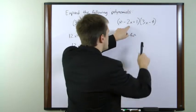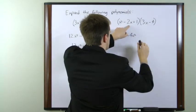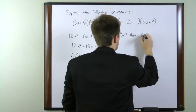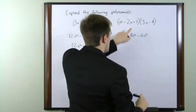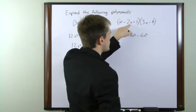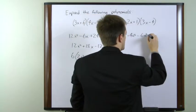Moving to the second term here, minus 2x times 3x gives us minus 6x squared. Minus 2x times minus 4 equals plus 8x.